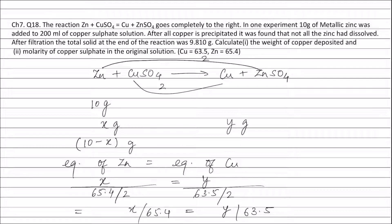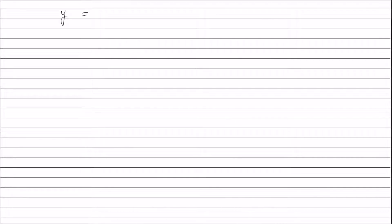As can be seen, x divided by 65.4 gives the moles of zinc and y divided by 63.5 gives the moles of copper. Since the equation is balanced and valency factors for zinc and copper are the same, moles of zinc equals moles of copper. From this equation, y equals x divided by 65.4, multiplied by 63.5.